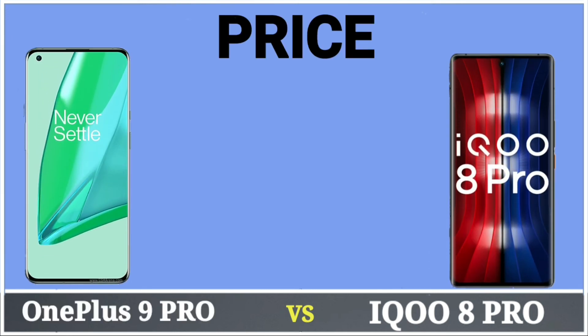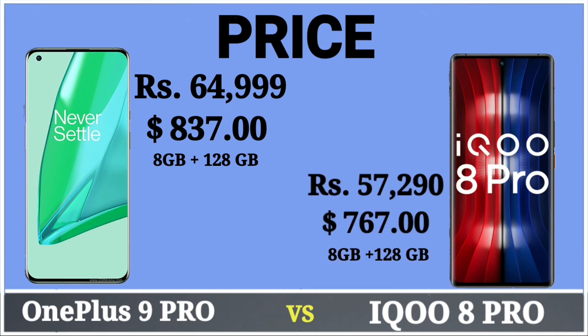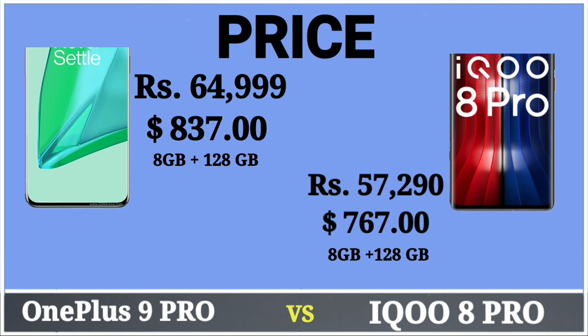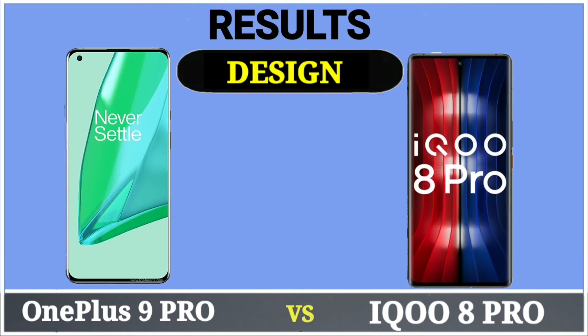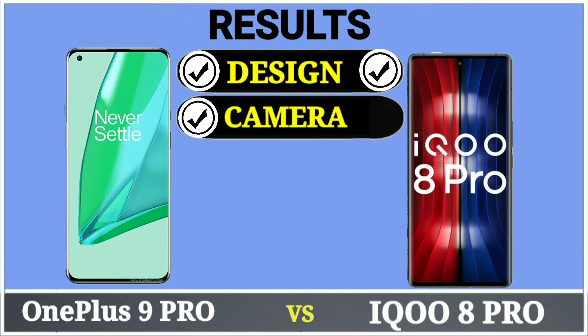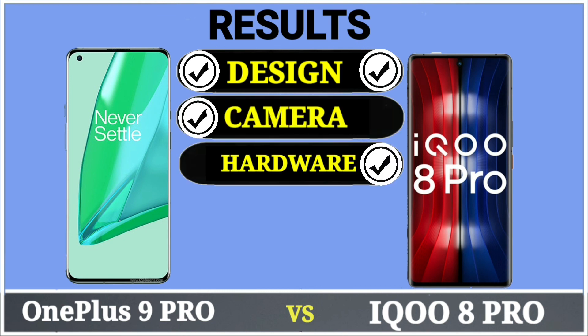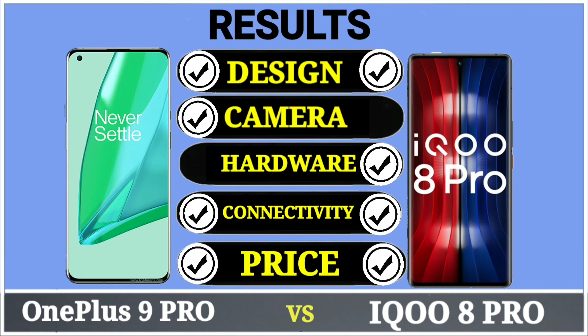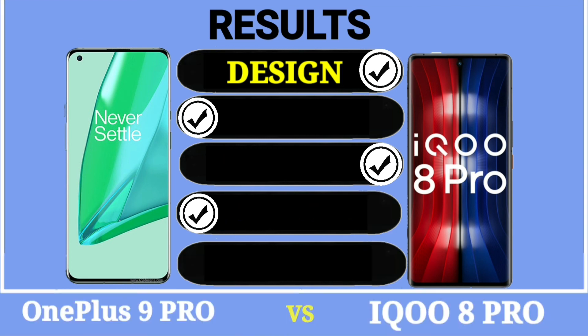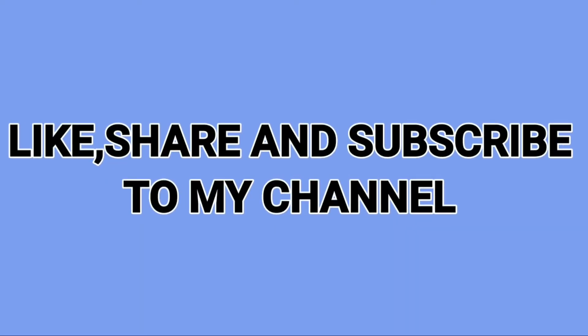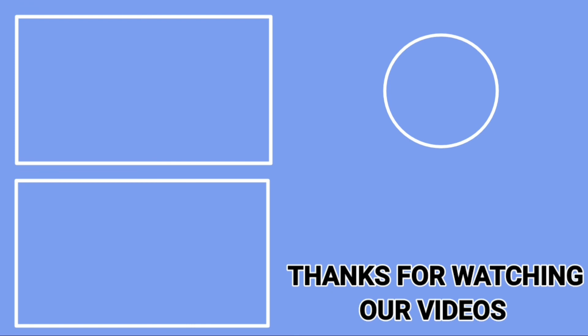OnePlus 9 Pro comes at around $65,837 for the 8GB RAM and 128GB storage variant. For the result: design and build quality are good on both phones. Camera-wise I will go for OnePlus 9 Pro, but hardware-wise I will go for Vivo iQOO 8 Pro because it has the Snapdragon 888 Plus processor. Connectivity-wise both are the same, and price-wise there is a little discount on the iQOO 8 Pro. If you like the video, don't forget to like, share, and subscribe, and comment which phone you like the most. Thank you for watching.